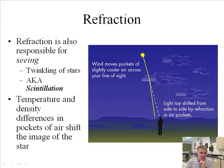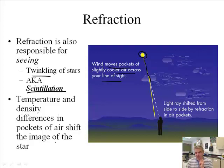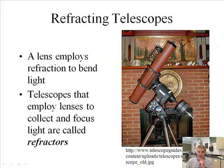Refraction is also responsible for the twinkling of stars. As starlight comes through our atmosphere — which is not a vacuum — it bends. Wind moves pockets of slightly cooler air across your line of sight, causing twinkling. The actual scientific name for twinkling is scintillation. Temperature and density differences in pockets of air shift the image of the star, so where you think you see the star isn't necessarily exactly where it is.